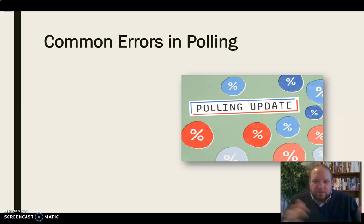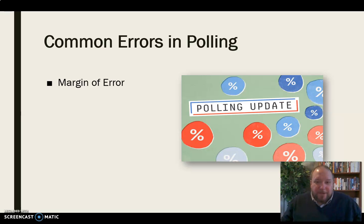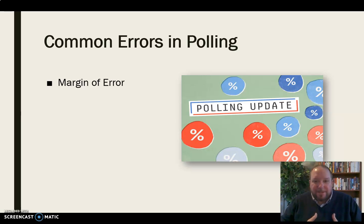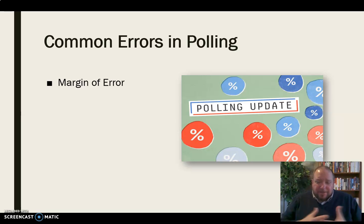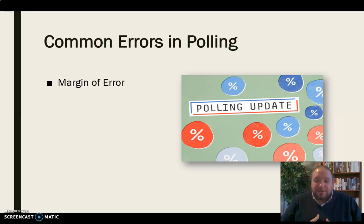There are some common errors in polls we need to look for. First, there's a margin of error built into just about every poll — they recognize this isn't 100% accurate. If two candidates are polling at 49 and 46 percent and the margin of error is 5 percent, then within a three-point difference but with a five-point margin of error, you really don't know anything. We need to look for that in the fine print: what's the margin of error and where does it place things relative to one another?